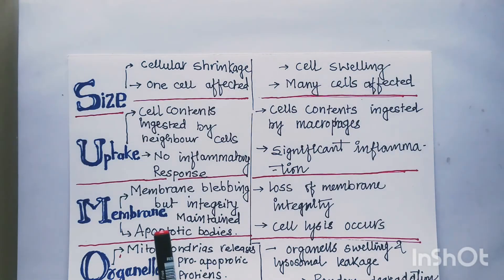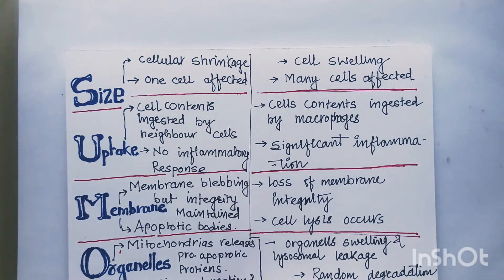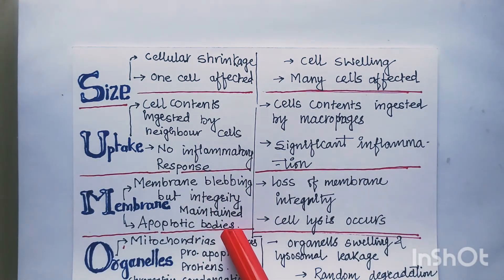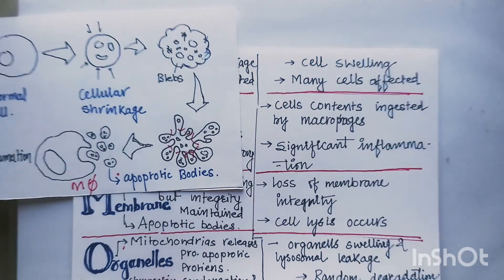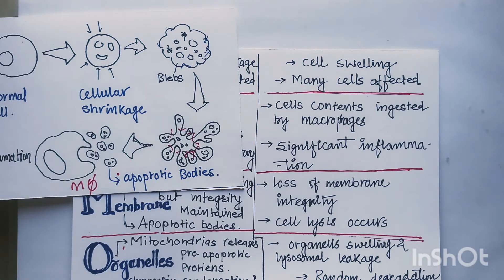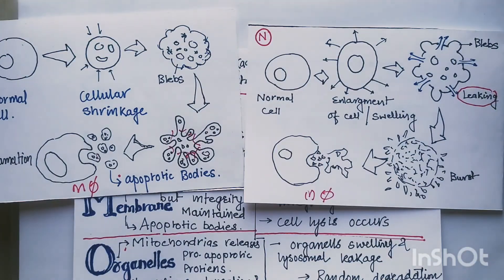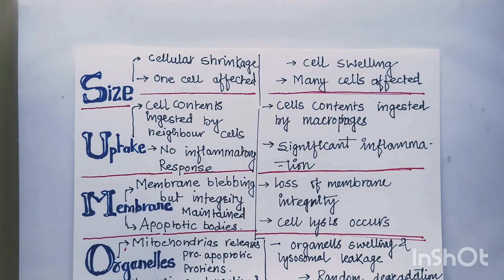Membrane integrity is not maintained in necrosis because cell lysis occurs, but in apoptosis, apoptotic bodies are produced. Regarding organelle changes: in apoptosis, mitochondria release pro-apoptotic proteins, which we will discuss in the next video. In necrosis, organelle swelling and lysosomal leakage are produced. In apoptosis there is non-random DNA degradation, whereas in necrosis there is random DNA degradation. These are the basic differences between apoptosis and necrosis.